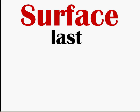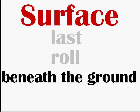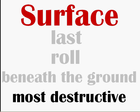Surface waves are the last into town and they roll as they travel just beneath the ground. But of three seismic waves they're most destructive around — they turn your roads into rubble and bring buildings down.